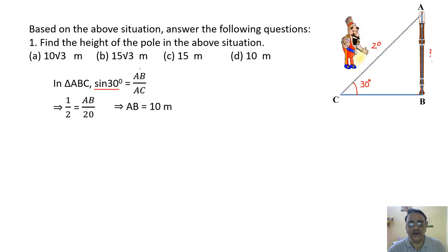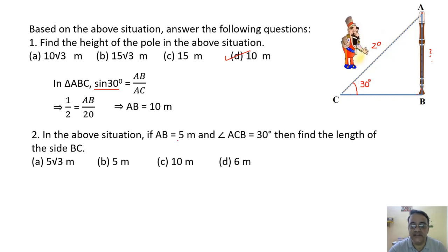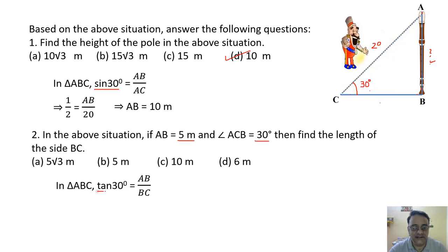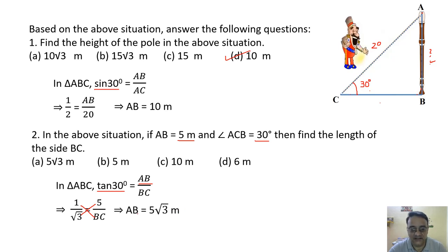Question 2: If AB = 5 meter and angle ACB = 30°, find BC. Opposite is given and we need adjacent, so we use tan 30° = AB/BC: 1/√3 = 5/BC. Cross multiplying gives BC = 5√3.